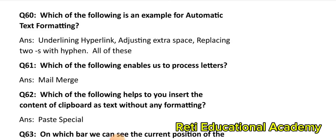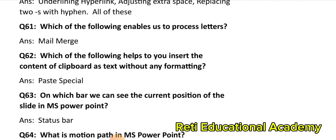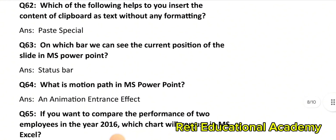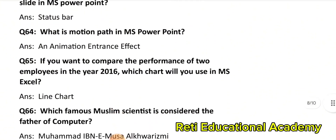Question number 63: On which bar can we see the current position of the slide in MS PowerPoint? The correct answer is: Status Bar. Question number 64: What is Motion Path in MS PowerPoint? The correct answer is: An Animation Entrance Effect. Question number 65: If you want to compare the performance of two employees in the year 2016, which chart will you use in MS Excel? The correct answer is: Line Chart. Question number 66: Which famous Muslim scientist is considered the father of computers? The correct answer is: Muhammad Ibn Musa Al-Khwarizmi.